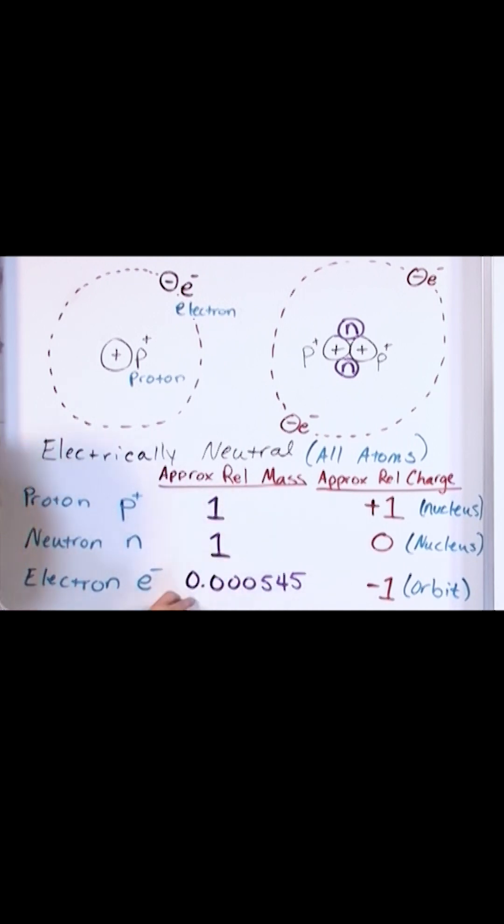Electrons on this scale here are a thousand times or more less massive than what we have here.